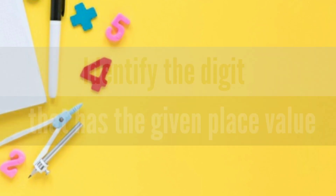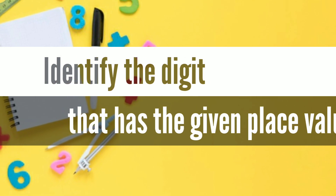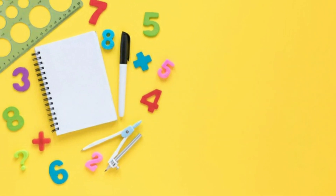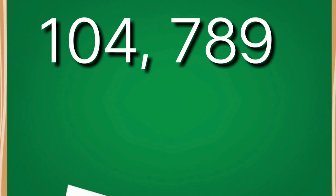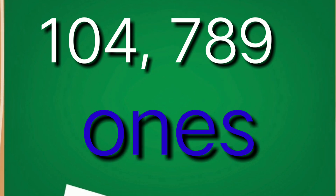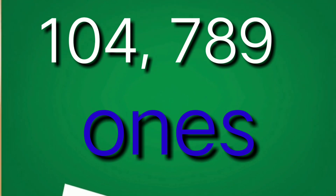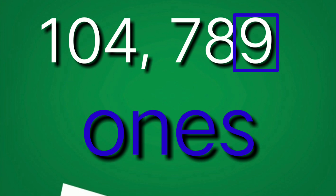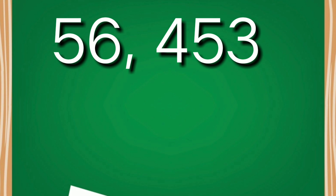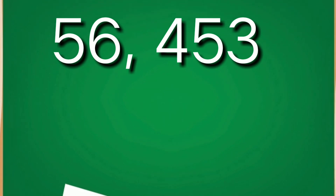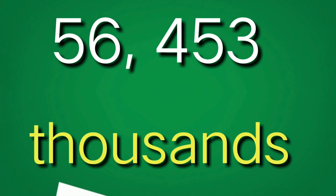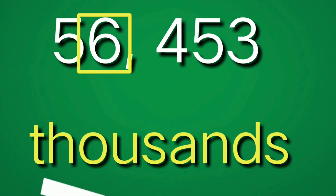Now let's try to identify the digit that has the given place value. We have one hundred four thousand, seven hundred eighty-nine — the given place value is ones. The answer is nine. Next, fifty-six thousand, four hundred fifty-three — the given place value is thousands. The answer is six.